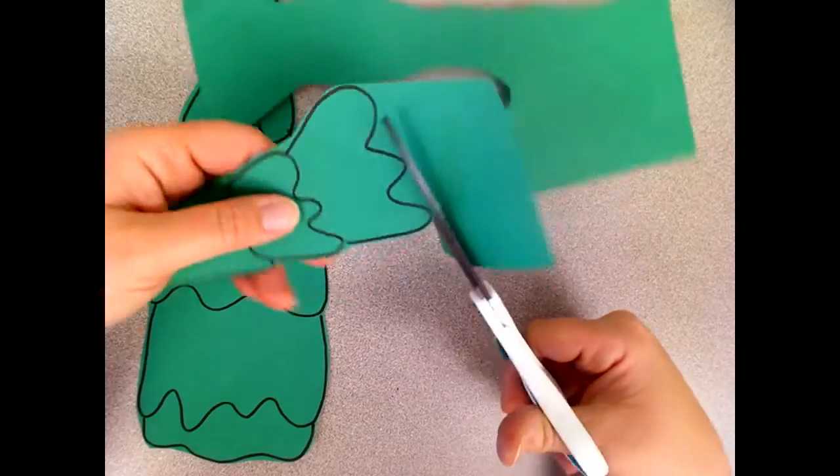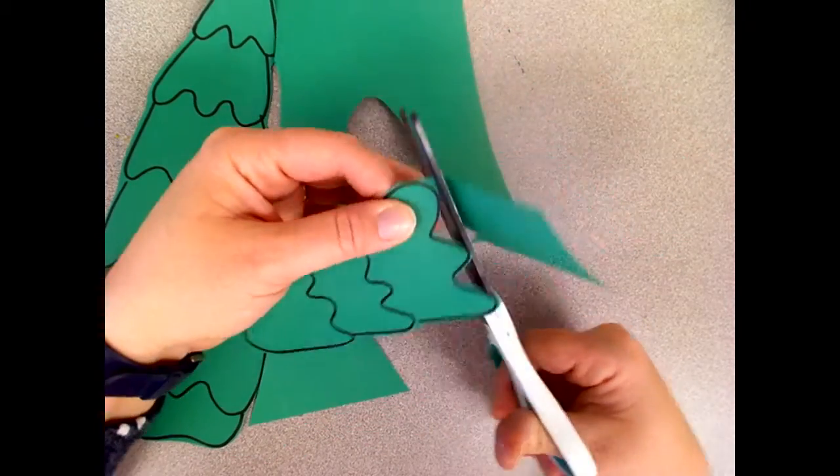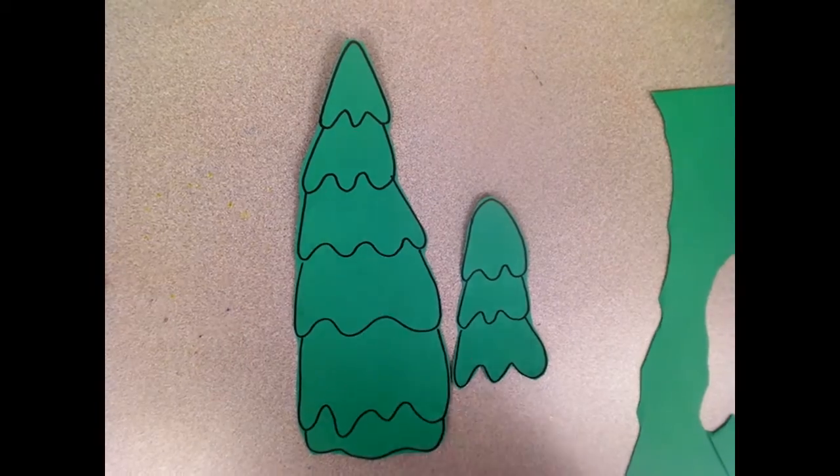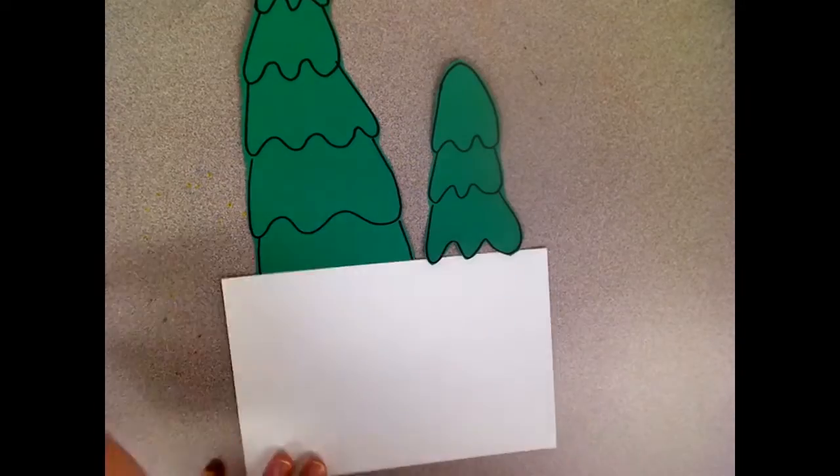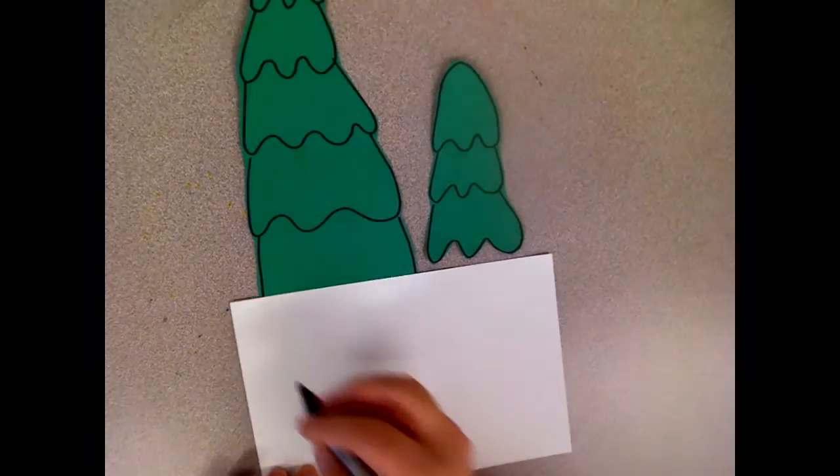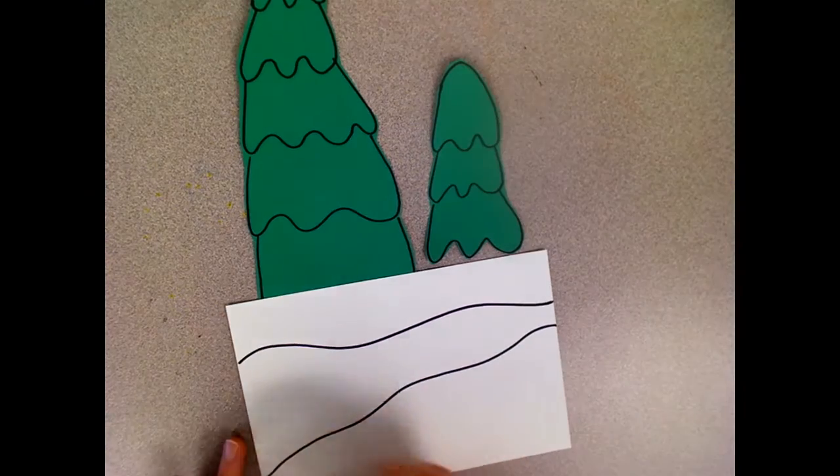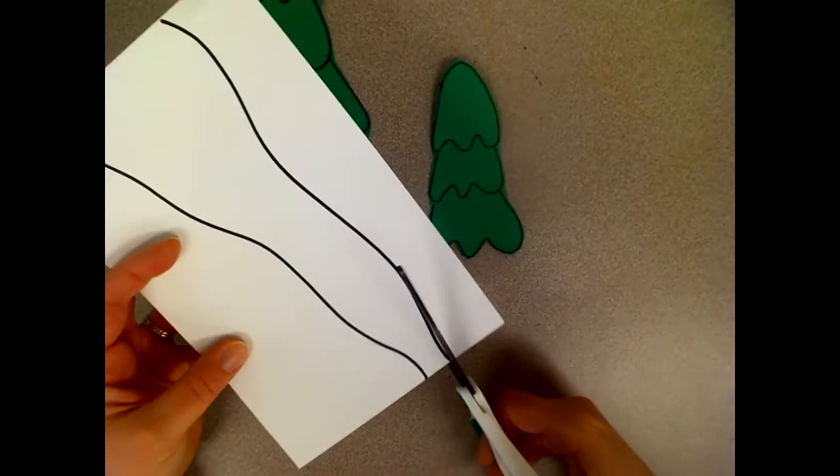Next we need some snow for your trees to be growing out of, like they're coming out of the ground. So you'll need your white piece of paper after you cut out both of your trees. Use your sharpie to draw two lines for drifts of snow on your piece of paper. You're gonna cut on the top line and the bottom line is just another layer of snow.